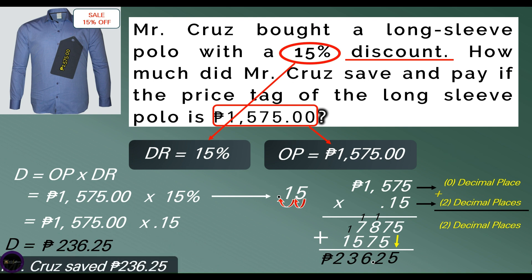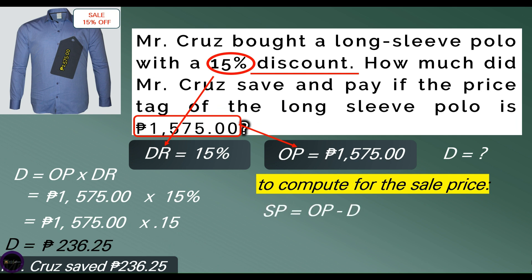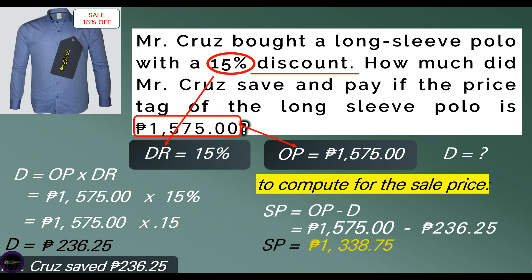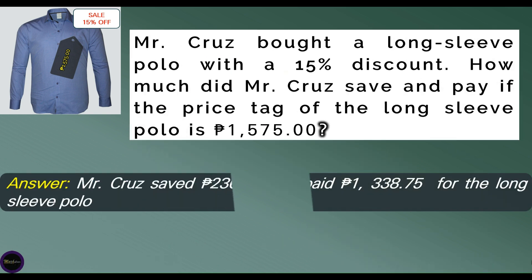Mr. Cruz saved 236 pesos and 25 centavos. To compute for the sale price, we use the formula: sale price equals original price minus discount. Substituting: 1,575 pesos minus 236 pesos and 25 centavos equals 1,338 pesos and 75 centavos. Therefore, Mr. Cruz paid 1,338 pesos and 75 centavos for the long-sleeved polo.